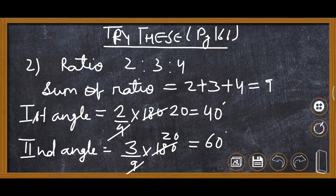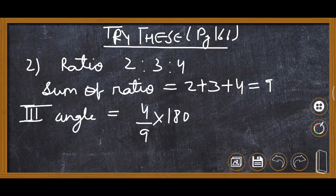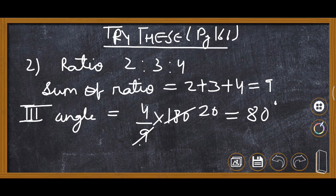Now we are required to find out the third angle. Third angle will be 4 upon 9 into 180 degrees. 180 degrees because the sum of all angles is 180 degrees. So here 9 into 20 is 180, so it is 80 degrees. You can see first angle 40 degrees, second 60 degrees, and third 80 degrees.